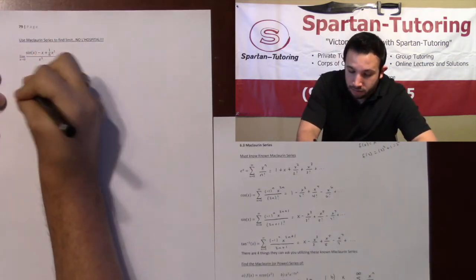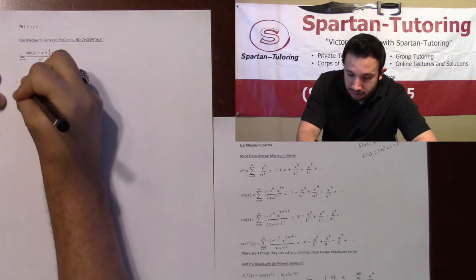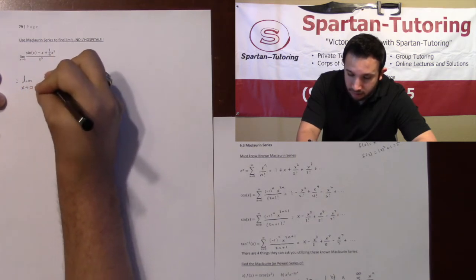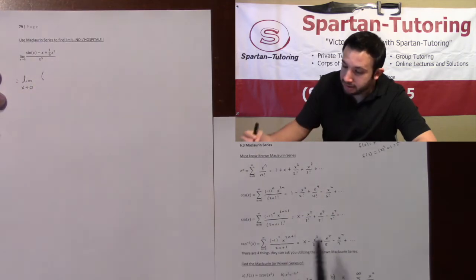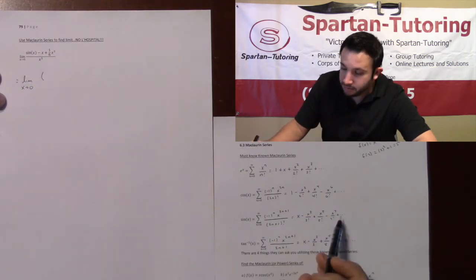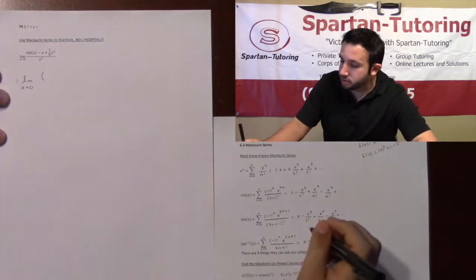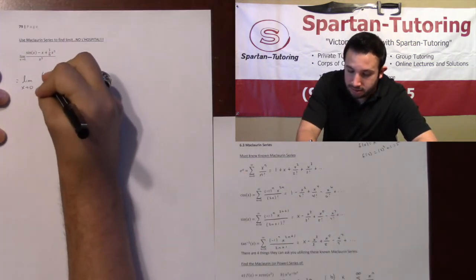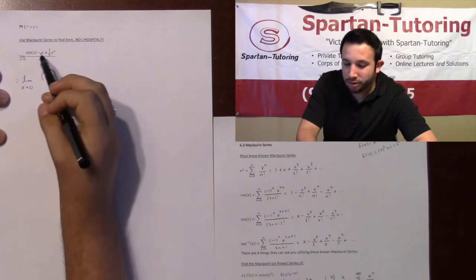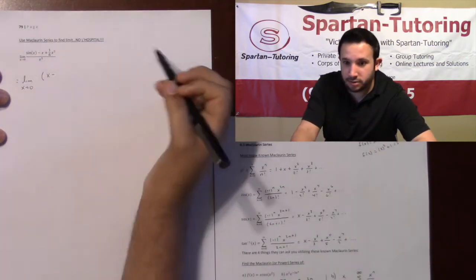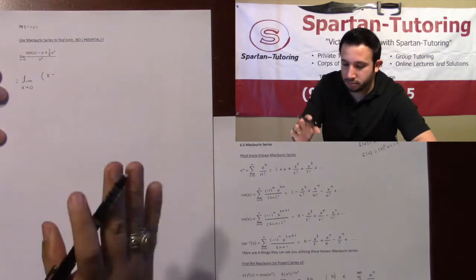We're going to have the limit as x approaches 0 of - now replacing sine with its expansion. Usually 4 to 5 terms is what I like. As a heads up, if there are 3 terms here, go 4; if there are 5 terms, go 6; if there are 2 terms, go 3.